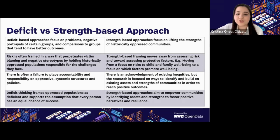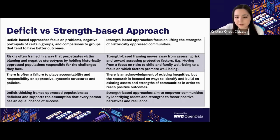Strength-based approaches, however, don't shy away from this reality. Strength-based approaches acknowledge inequities, but remain focused on identifying strengths and protective factors to encourage positive outcomes. With this framework, we can begin to move away from assessing risk and factors that decrease well-being and toward assessing the factors that promote well-being. The goal is to empower communities by building on identified assets to foster positive narratives of strength and resilience. But moving toward this can be very difficult. There are deep tensions in moving away from a dominant framework, and we might ask ourselves, where do we even begin?